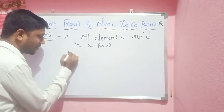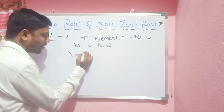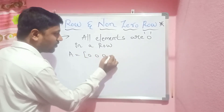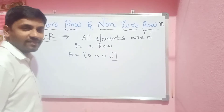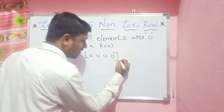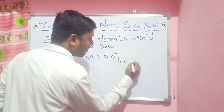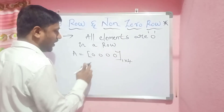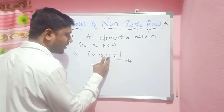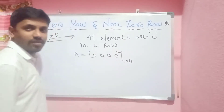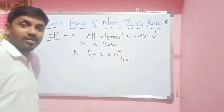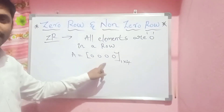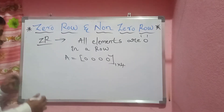For example, capital A is equal to [0, 0, 0, 0]. This is the order of one row having four columns — only one row and four columns. So this is a zero-row. Why? Because all the elements are zeroes in a row, it is called a zero-row.